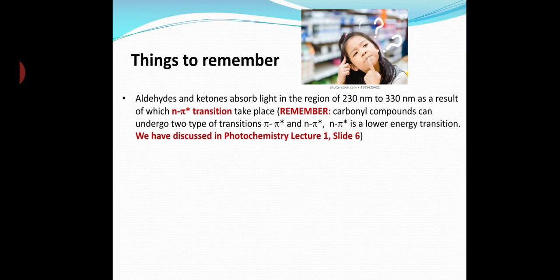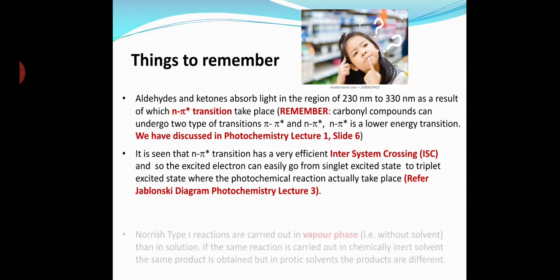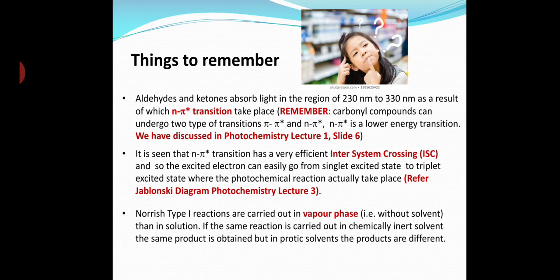The n→π* transition is a lower energy transition. Another important point is that n→π* transition has a very efficient inter-system crossing, as a result of which the excited electrons can easily go from the singlet excited state to the triplet excited state where the photochemical reaction actually takes place. Norrish Type 1 reactions are generally carried out in the vapor phase rather than in solution, because the radicals react with the solvent to give different products.